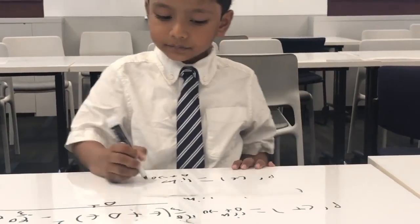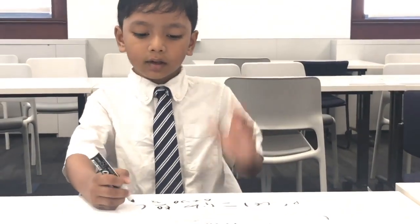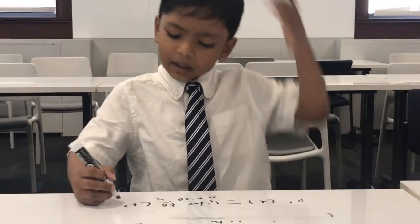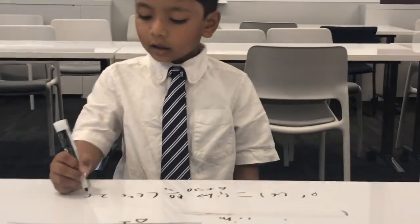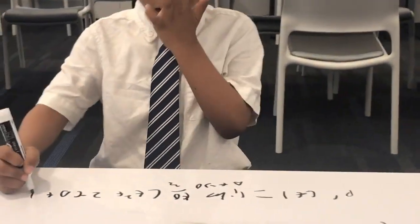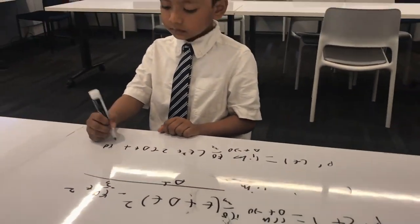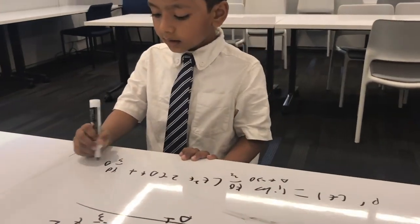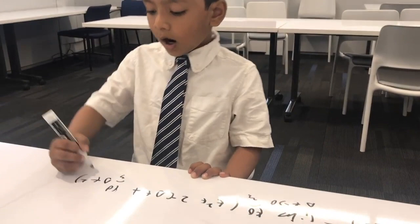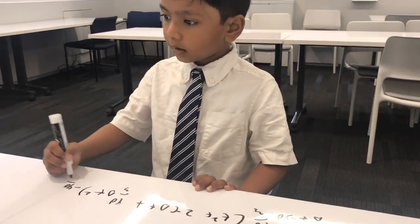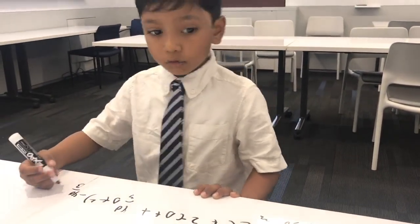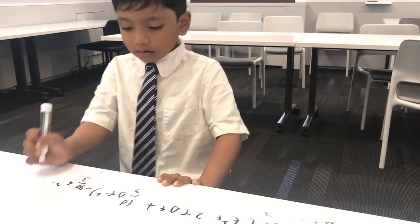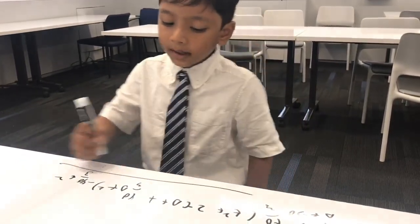So that means I'm 40 over 3, so T squared plus 2T delta T, plus 40 over 3 delta T squared minus 40 over 3 T squared over delta T.